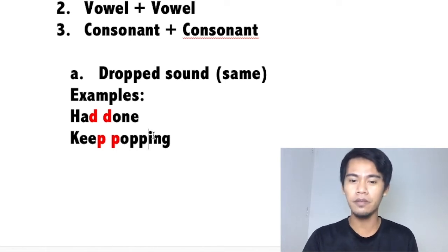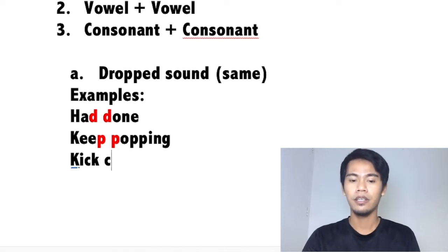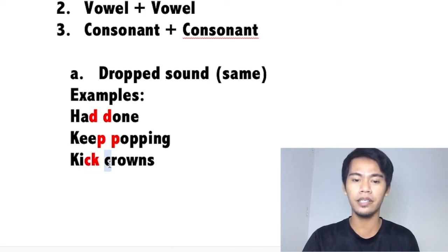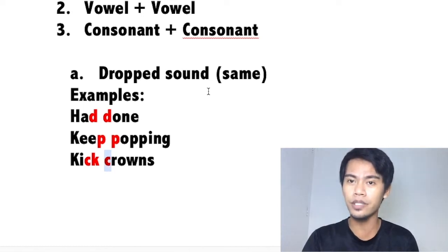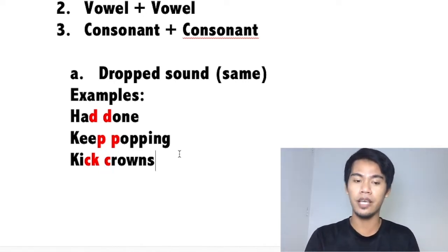Another example: 'kick rounds.' Last sound of the first word is the K sound. First sound of the next word is also the K sound. Let's mark that in red. Do they have the same sound? Yes. So just drop and say 'kick rounds.' You don't say 'kick rounds' with a doubled K — say 'kick rounds.'